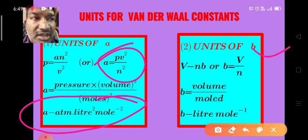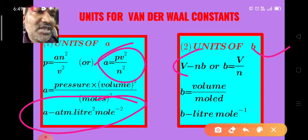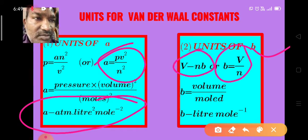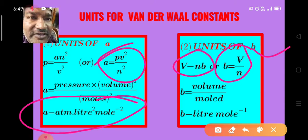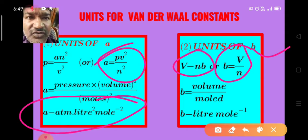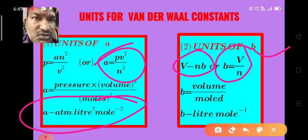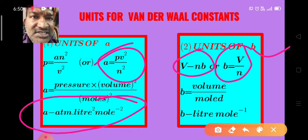The constants a and b depend on the nature of the gas. As the a and b values increase, the tendency of the gas to change into liquid also increases. Therefore, easily liquefiable gases have high a and b values.